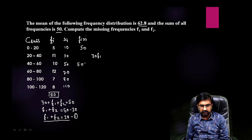Now 11 into 30, that is 30 f1. 10 into 50 will give you 500. F2 into 70 will give you 70 f2. And then here 7 into 90 is 630. And here 8 into 110 is 880. So sum of this will be plus 30 f1 at the last, plus 70 f2 at the last.